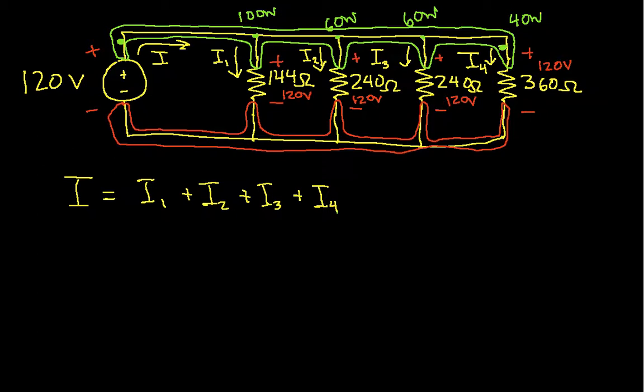Since I now know these voltages, I've got a voltage and I've got a resistance. If I know the voltage across this resistor and I know its resistance, I can use Ohm's Law to get its current. So I1 will be 120 volts over 144 ohms, which turns out to be 0.83 amps.